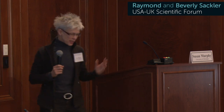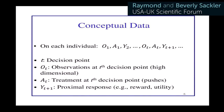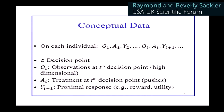This is a conceptual version of the data — it's not quite right because there are many different timescales in actuality. This proximal response is what we're going to use in order to decide what type of treatment or whether to provide a push. We look at the proximal response in order to decide whether or not it was useful.